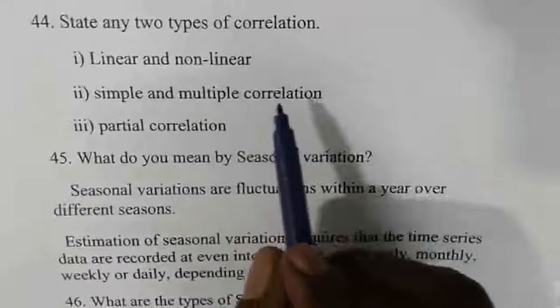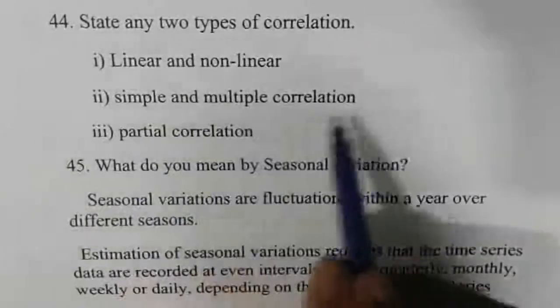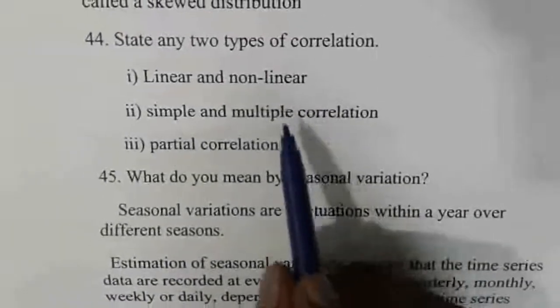Types of correlation: there are three types — linear and non-linear, simple and multiple correlation, and partial correlation.